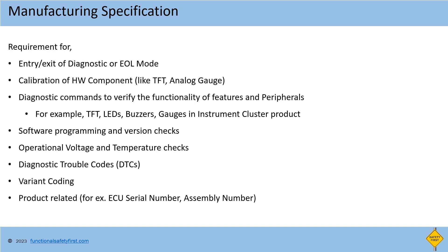Manufacturing specification also includes instructions for software programming and software version checks, product part number checks, diagnostic commands for operational voltage and temperature checks, DTCs which are used to record the failures of features and peripherals, variant coding related to vehicle variants and country-related requirement changes, and product-related parameters like ECU serial number, assembly number, etc.